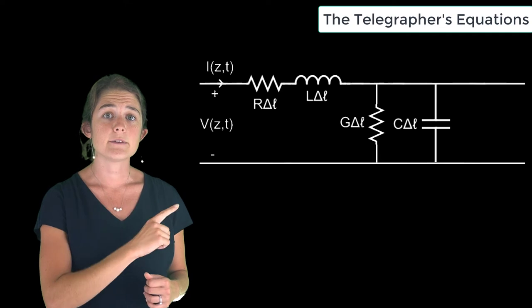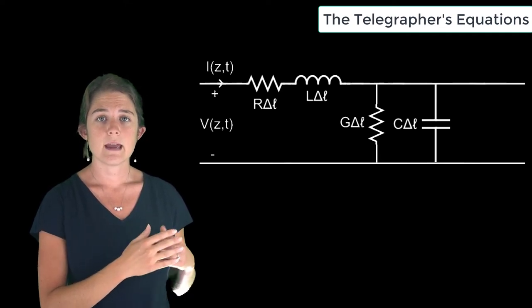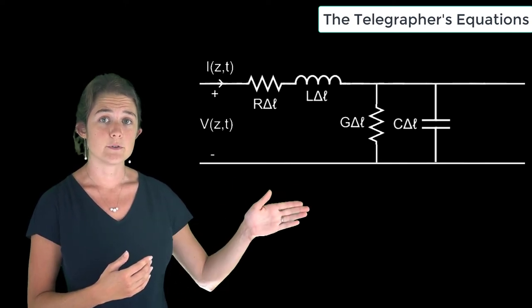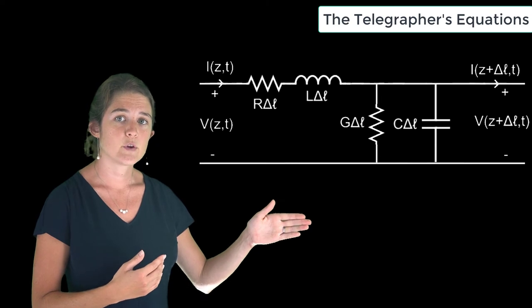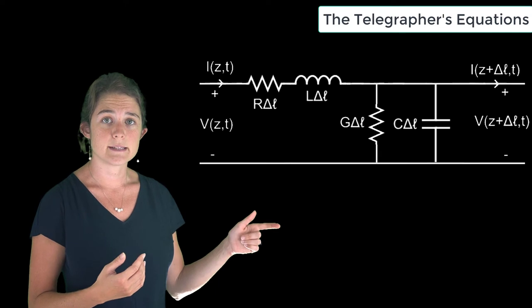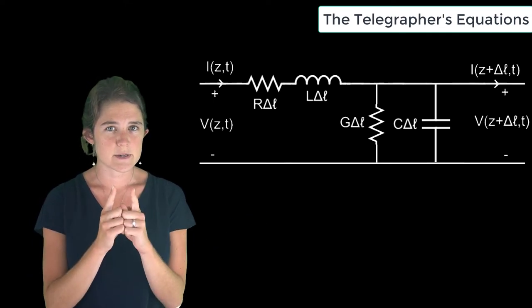This system has its input on the left-hand side, where we define the input voltage V(z,t) and the input current I(z,t). The output voltage and current are on the right, where we define V(z+Δℓ,t) and I(z+Δℓ,t).